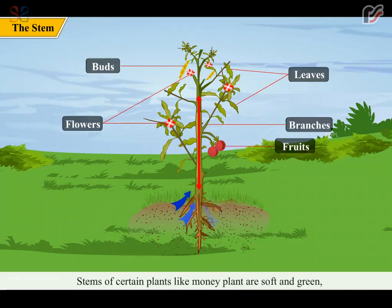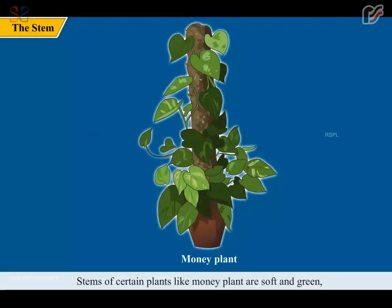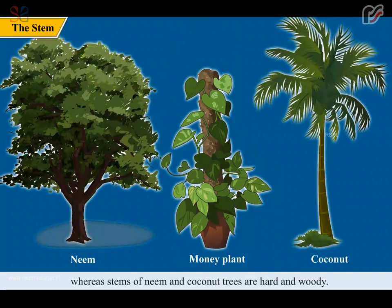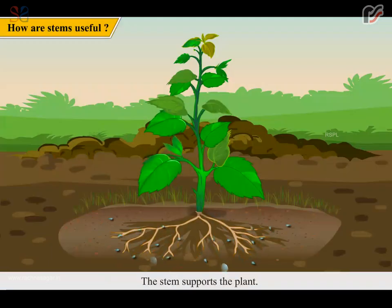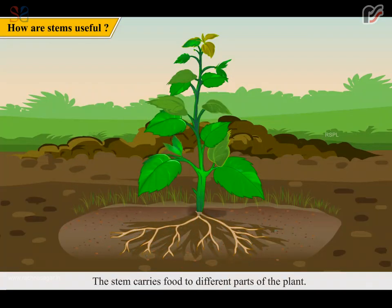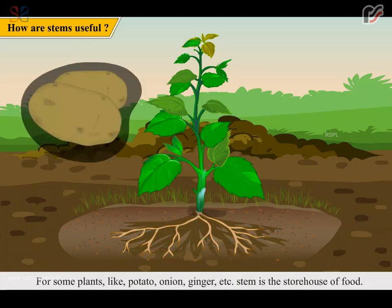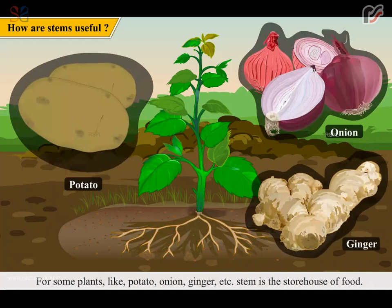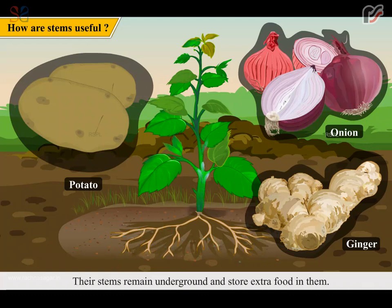Stems of certain plants like money plant are soft and green, whereas stems of neem and coconut trees are hard and woody. The stem supports the plant and carries food to different parts of the plant. For some plants like potato, onion, ginger etc., the stem is the storehouse of food. Their stems remain underground and store extra food in them.